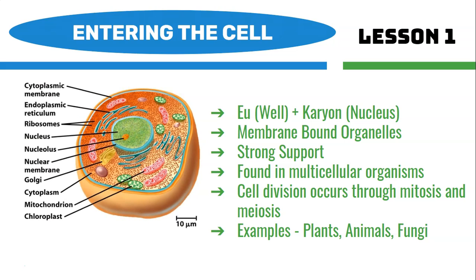Now let's look at the eukaryotic cell. If we break down the word, 'eu' means well and 'karyon' means nucleus, so we know that it has a well-defined nucleus area. Just looking at the diagram, we see that the nucleus is surrounded by several organelles, surrounded by a nuclear membrane and a nuclear pore. It's a well-defined organelle — it's the heart of the cell, the brain of the cell, and really the nucleus is what controls the entire cell and directs all its activities.